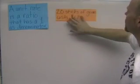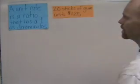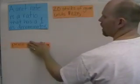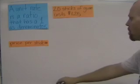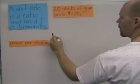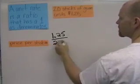For example, if we have 20 sticks of gum that cost $1.25, we can find a unit ratio of price per stick, and price per stick means we're going to have $1.25 over 20 sticks.